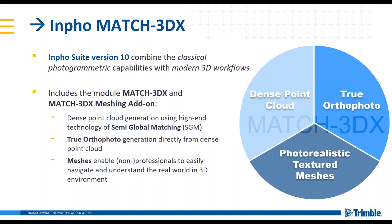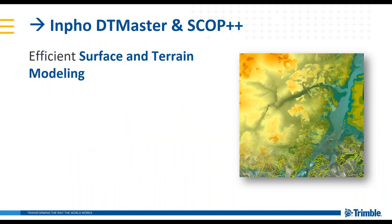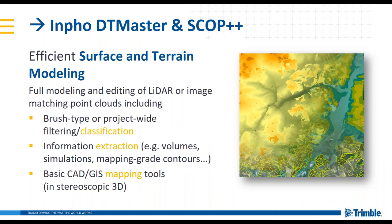Once your surface is generated, it's time to go into DTMaster, our surface and terrain modeling package. With the addition of a product called Scope++, it is a point cloud classifier that also allows you to extract information to generate mapping-grade contours, calculate volumes, and it has a full suite of basic CAD and GIS mapping tools for editing and viewing in a stereoscopic 3D environment.